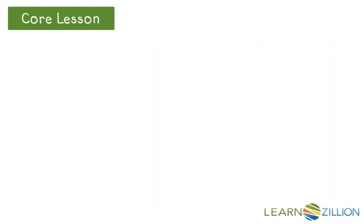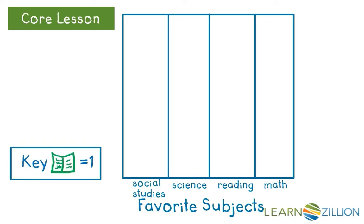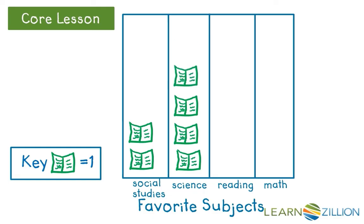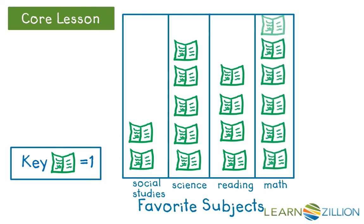Keeping in mind the important things that we have to have in every picture graph. We need a title. We need a table with category labels. This time our table is going to be vertical. It will go up and down. We see that we have social studies, science, reading, and math, just like on our tally chart. And of course the key — each book means one vote. Two people for social studies, five people for science, four people voted for reading, and the most popular was math with six votes.